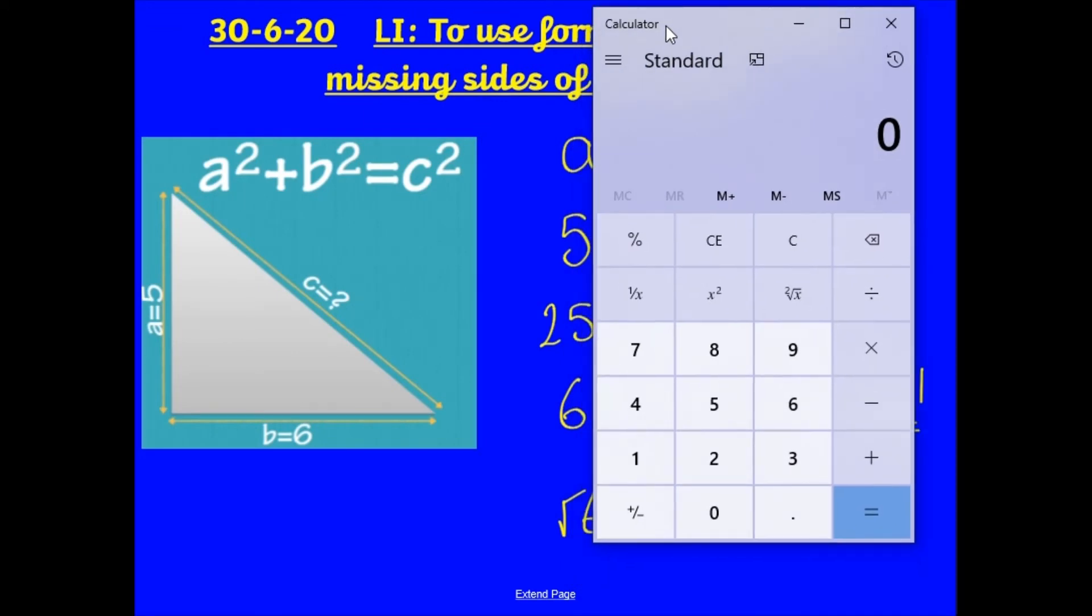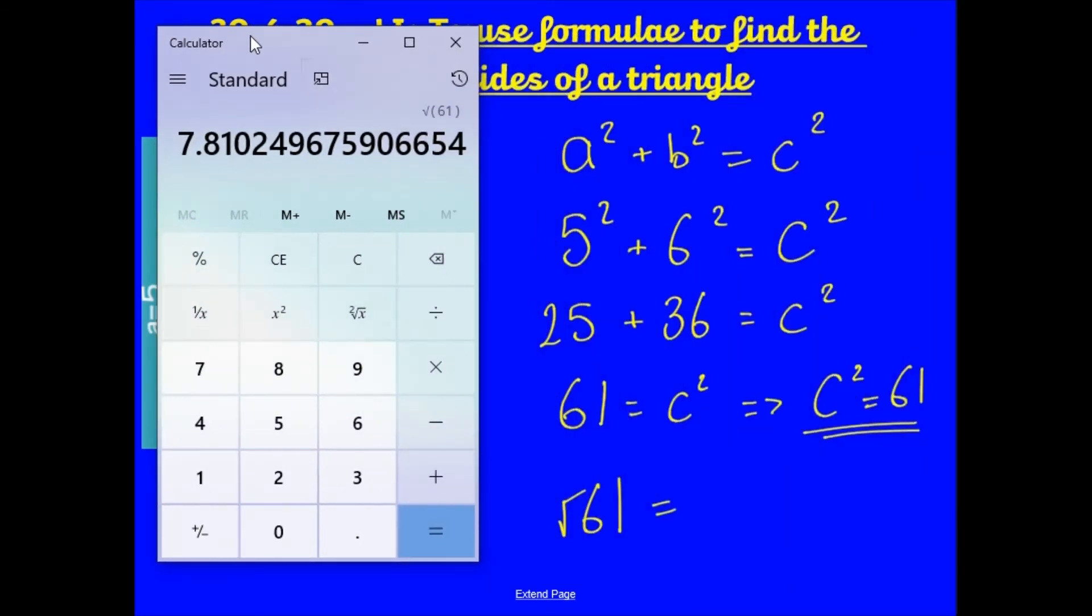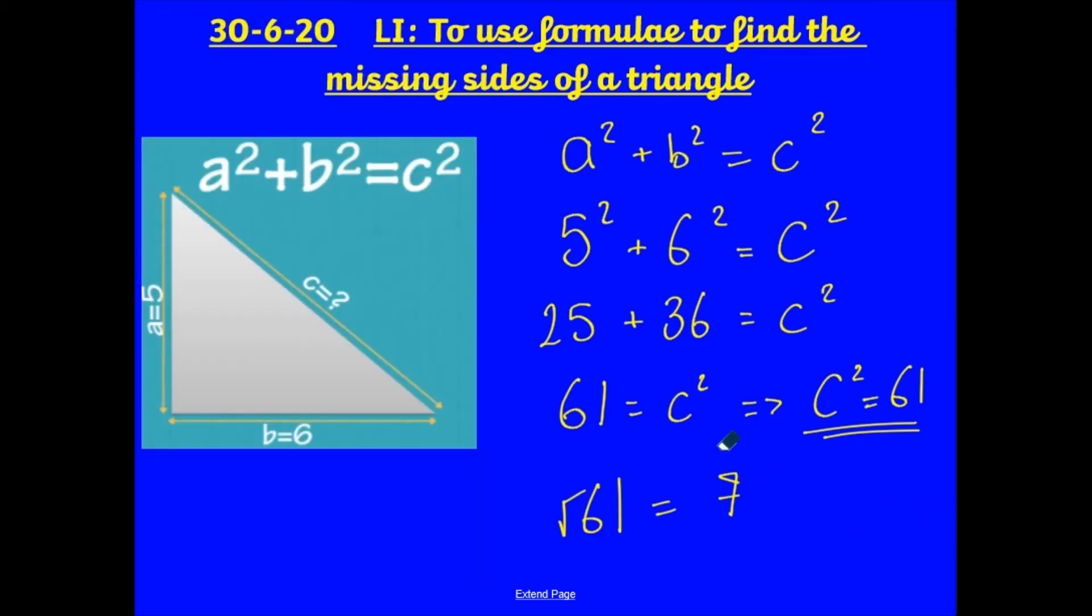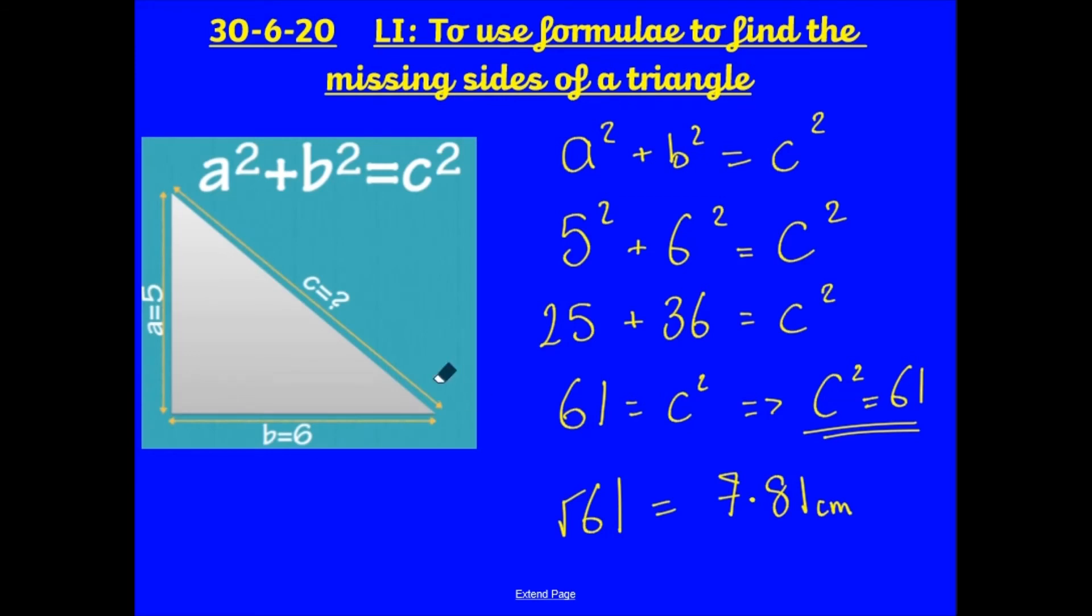So, on your computer, you'll have a calculator, as with your phone. And all you'll need to do, in this case, I am finding out the square root of 61. So, 61. And then this button here will find me the square root. Ooh, it's a big number. I'm going to take it to two decimal places. It is 7.81 centimeters.